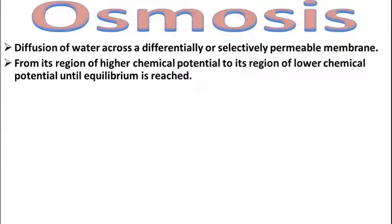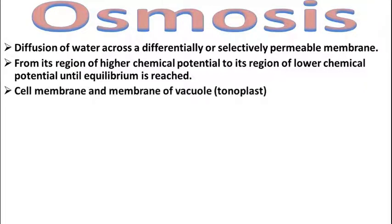From its region of higher chemical potential to its region of lower chemical potential until equilibrium is reached. जब तक equilibrium नहीं आ जाता, एक जैसी concentration दोनों side में नहीं आ जाती, तब तक water move करता रहता है — उसी को osmosis बोलते हैं।